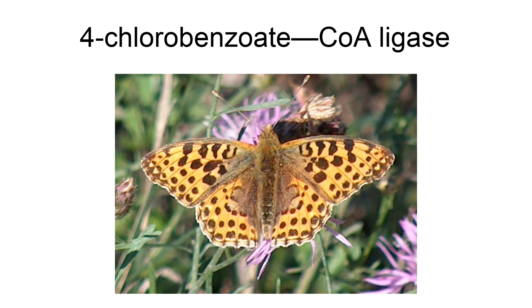In enzymology, a 4-chlorobenzoate CoA ligase, EC 6.2.1.33, is an enzyme that catalyzes the chemical reaction.